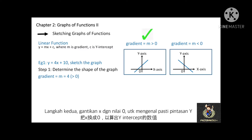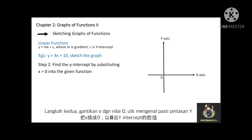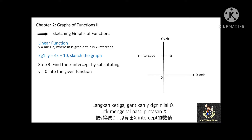Step 2: we identify the y-intercept by substituting x = 0 into the equation y = 4x + 10. The y-intercept equals 10. Then we also find the x-intercept by substituting y = 0 into the equation y = 4x + 10. The x-intercept is equal to negative 2.5.